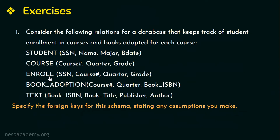In the relation enrolled, we have SSN, course number, quarter, and grade as its attributes. This relation keeps track of all the students enrolled in different courses. One student can be enrolled in multiple courses, and multiple students can be enrolled in the same course. So with just SSN or only course number, we cannot identify each tuple uniquely. We need a combination of both SSN and course number, therefore they together form the primary key of the enrolled relation.